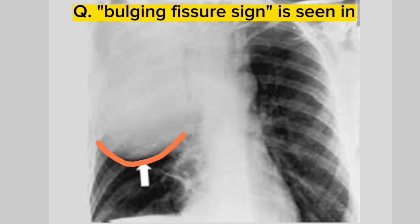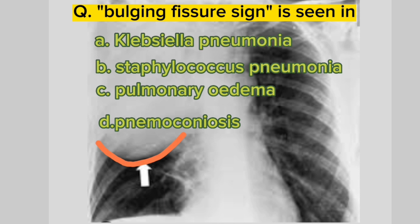Bulging Fissure Sign is seen in: Klebsiella Pneumonia, Staphylococcus Pneumonia, Pulmonary Edema, or Pneumoconiosis? The answer is Klebsiella Pneumonia.